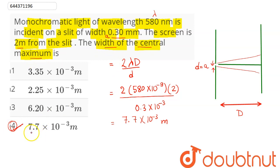The width of the central maximum in single slit diffraction experiment is found to be 7.7 into 10 power minus 3 meter. Hence, 4 is our answer.